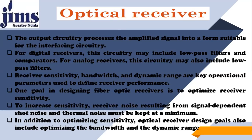The output circuitry of the optical receiver processes the amplified signal into a form suitable for the interfacing circuitry. For digital receivers — which we always use nowadays — this circuitry may include low-pass filters and comparators. For analog receivers, this circuitry may also include low-pass filters. So the circuitry used in the optical receiver basically consists of filters and comparators.